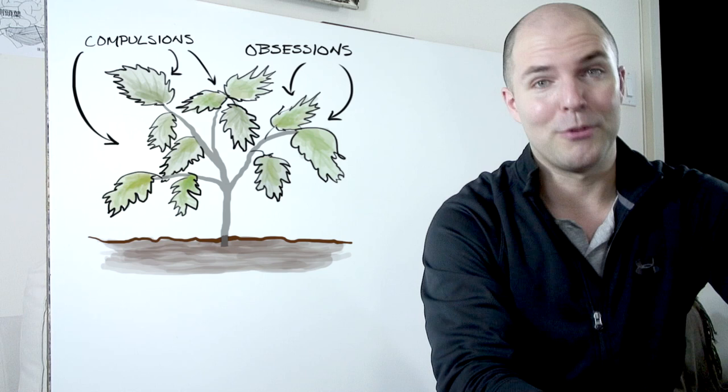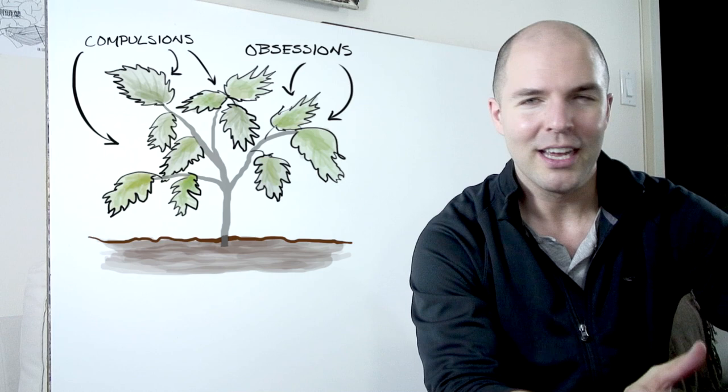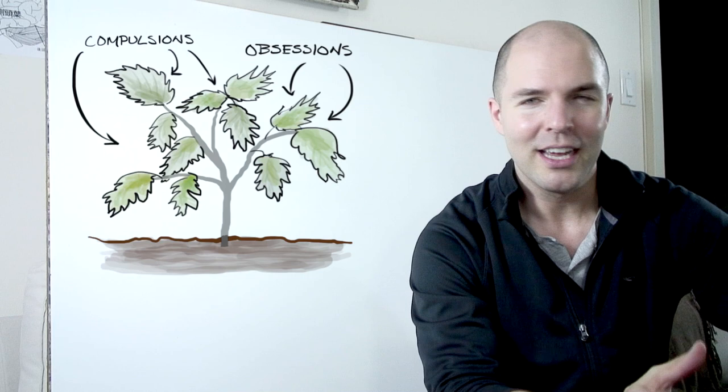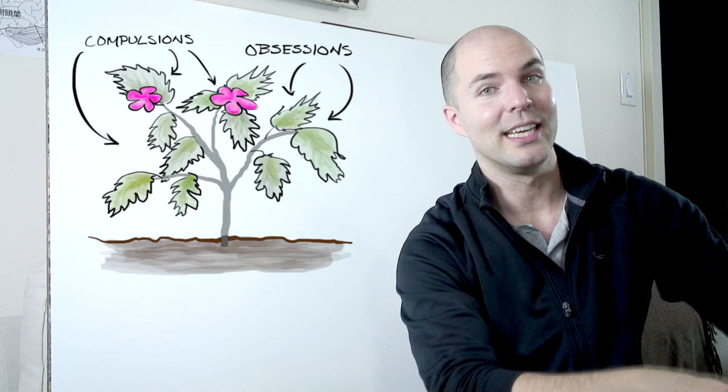Sometimes we even like some of our obsessions or compulsions and we think they're normal and we enjoy them. That's very normal and so probably this weed also has some kind of pretty flowers and that's to trick you into thinking that it's not a weed, it's a flower.